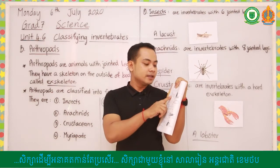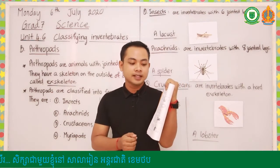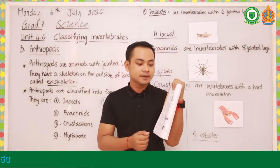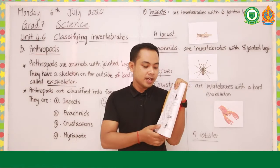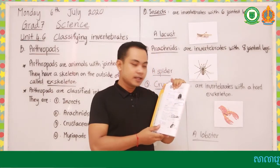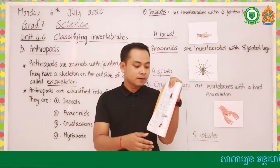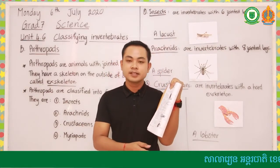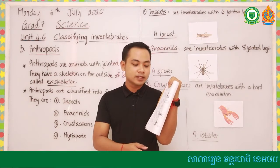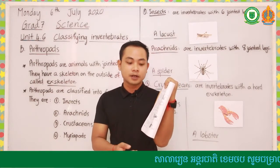Mollusks are invertebrates or animals with soft bodies, like a snail. Annelids are animals with segmented bodies, like worms - for example, the earthworm.